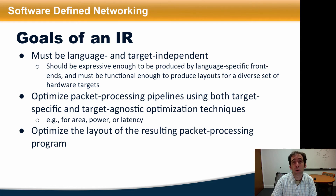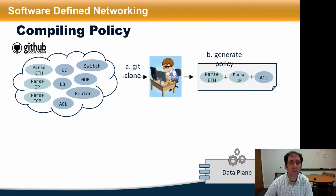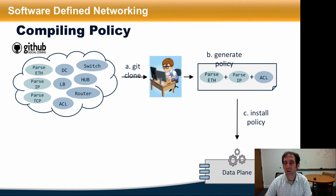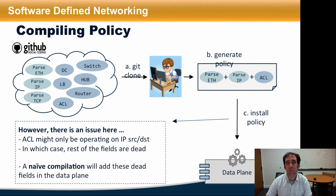We expect that programmers will organize their policies into libraries and modules, possibly written in different languages such as P4 or protocol-oblivious forwarding. These libraries might be accessible through public repositories like GitHub. A network programmer can then take these modules and compose them to write more complex policies and install them on a data plane device. Unfortunately, installing such policies is not straightforward. For example, an access control list might only be operating on an IP source and destination, in which case the rest of the fields are unused. However, a naive compilation will add these fields into the data plane, so we need mechanisms to ensure that such redundancy is removed and the policy is efficiently compiled to the underlying target.